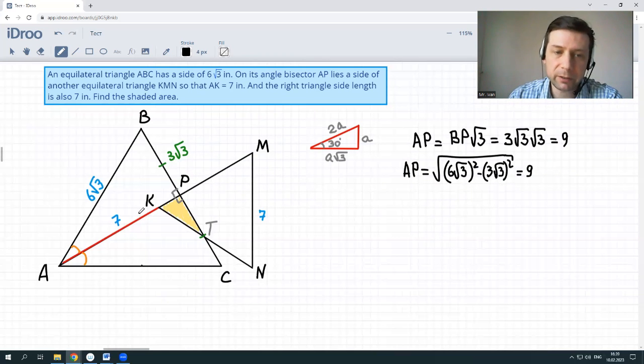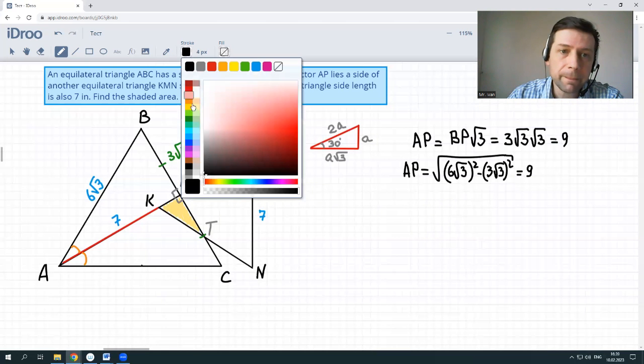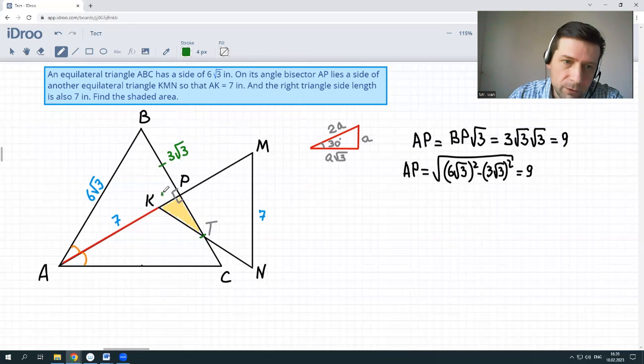Means if we subtract 7 from 9, we'll get KP. KP length is just 2. So here is 2.